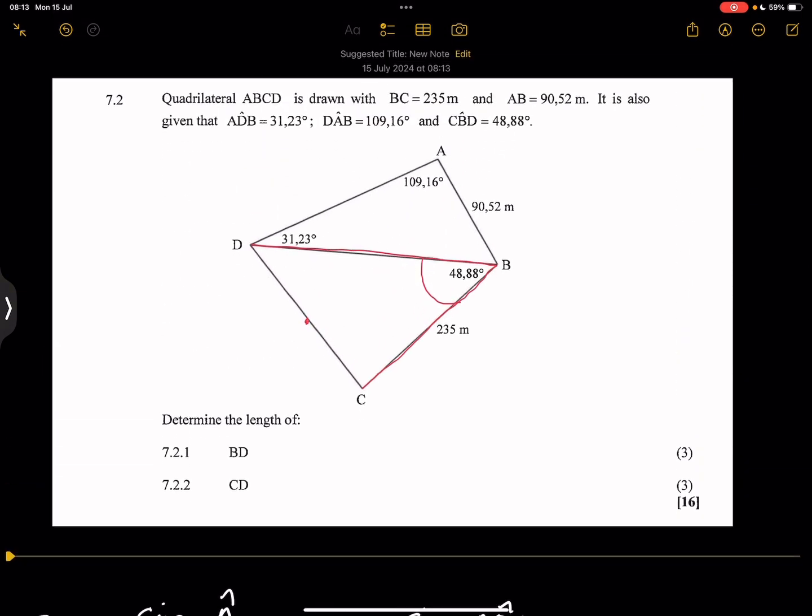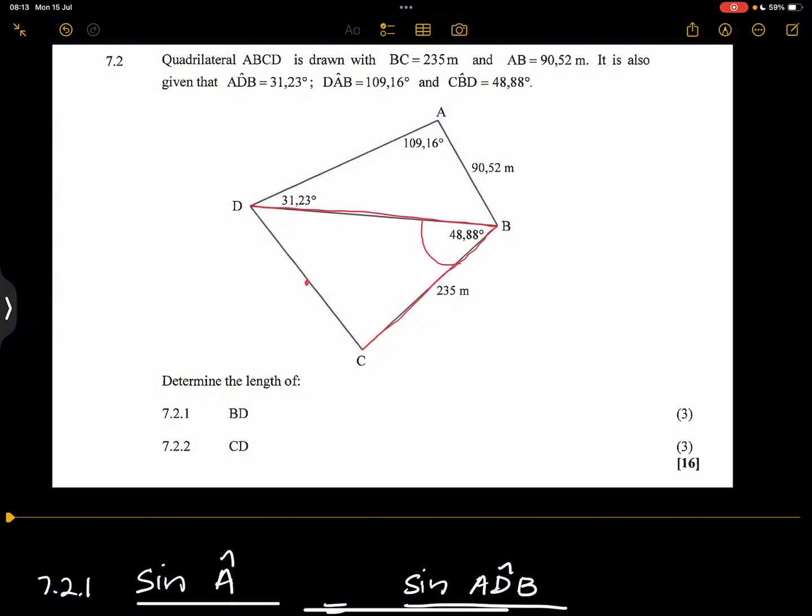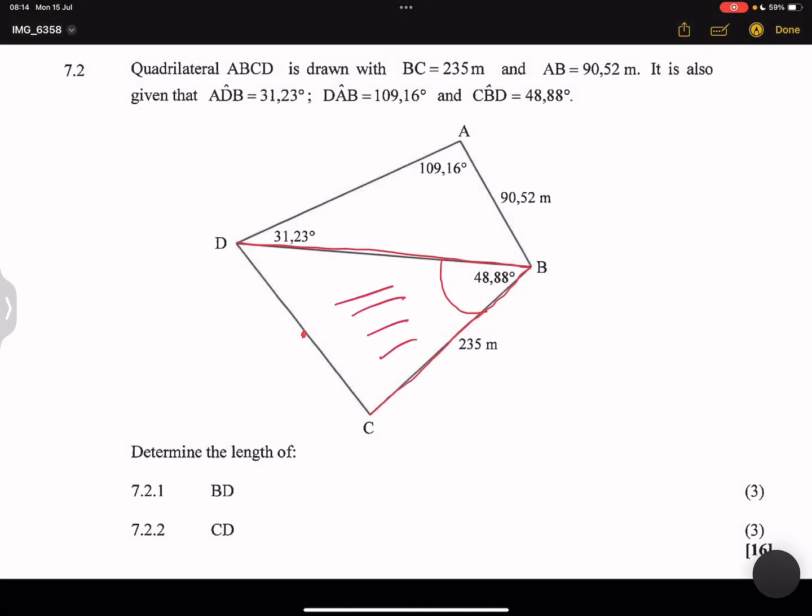But, you know, I just wanted to add perhaps one more thing. Perhaps if they had said to us, calculate the area of triangle DBC, the same triangle that we're working on. So if we had to work on the area of this triangle, remember once again, two sides and the included angle. So what you're going to do there is say, the area of triangle DBC would be equal to, you're going to always say half, two sides and an included angle. And in this case, that would be BD multiplied by BC. And it's always going to be the sine of that included angle. So the included angle in that case would be CBD.